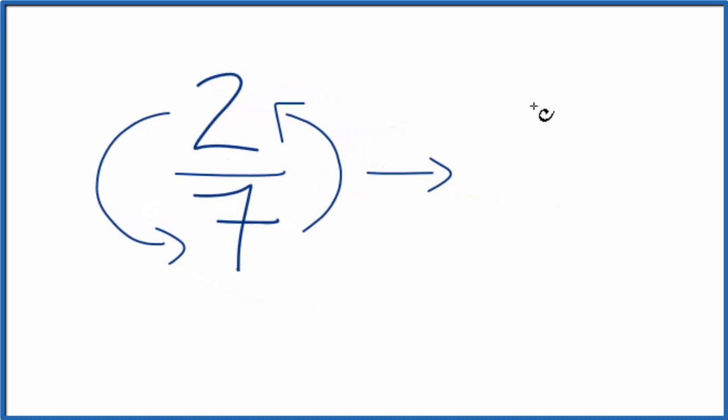When we do that, we get seven on top and two on the bottom. So the reciprocal for two-sevenths is seven halves.